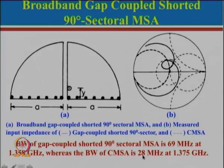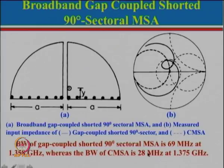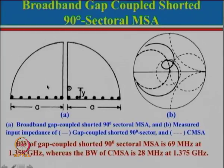That is more than double the bandwidth. For a circle the area will be double of this entire configuration, so for half the area we are getting a bandwidth which is more than 2 times. There has always been a discussion that you cannot increase the bandwidth without increasing the volume of the antenna, but here we can see the volume is reduced by almost 50 percent and yet bandwidth is increased by more than 200 percent. By using this gap-coupled configuration we can increase the bandwidth.